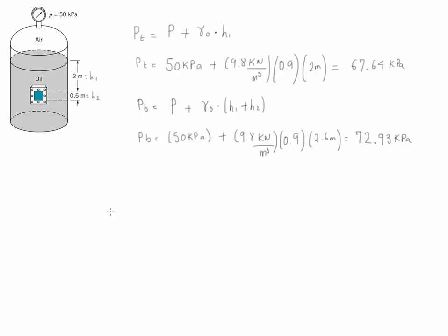Let's now calculate the resultant force using the prism method. We need to draw two things: the surface on which we're applying the pressure, and also the pressure distribution. So we're going to first draw the plate — it's a square and we know that this is 0.6 meters by 0.6 meters. The second thing we're going to draw is the pressure distribution.